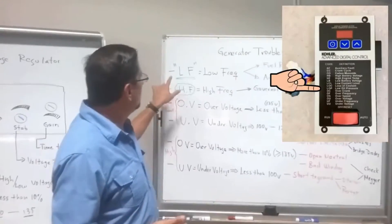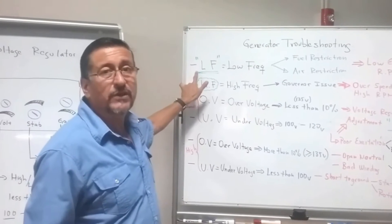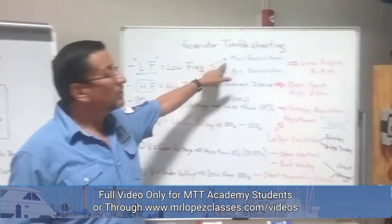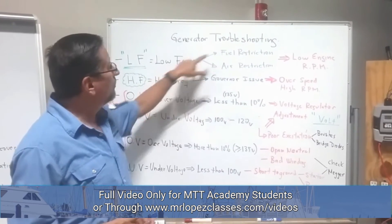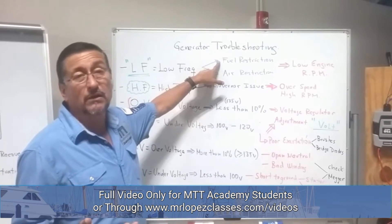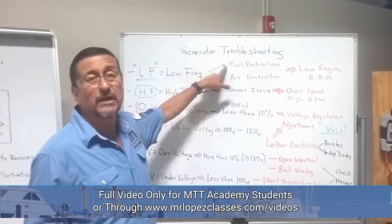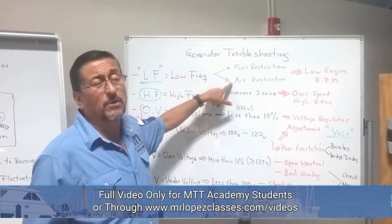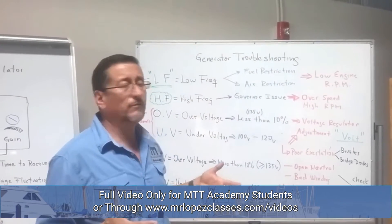The first code is LF. LF is a low frequency. Low frequency is basically a fuel restriction or air restriction. Fuel restriction is basically a problem with a fuel filter, fuel contaminated, or fuel lines clogged. Air restriction is basically a problem with the air filter or a problem with the insulation of the sun shield of the generator.